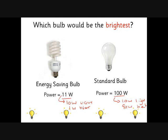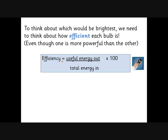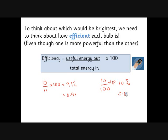Light is the useful energy out. This gives us the efficiency equation: efficiency = useful energy out divided by total energy in. In that example, for the efficient bulb we got 10 watts out of the 11 we put in. Sometimes we multiply that by 100 to make it a percentage, giving us about 91%. The filament bulb gives only 10 watts out of 100, making it 10% efficient. You'll also see these as decimals: 0.91 and 0.1 — both forms are used.